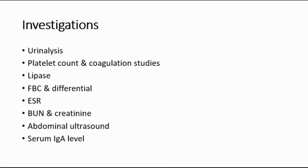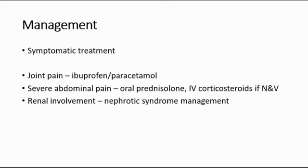For management, it is mainly symptomatic treatment. For joint pain, we can give ibuprofen or paracetamol. For severe abdominal pain due to intussusception causing colicky abdominal pain, we can give oral penicillin or IV corticosteroids if the patient is having nausea and vomiting. For renal involvement such as glomerulonephritis, we can manage for nephrotic syndrome. For those having nephrotic-range proteinuria or signs of renal impairment, we can refer to a nephrologist.